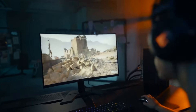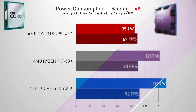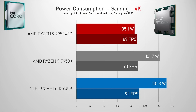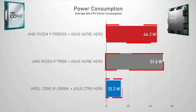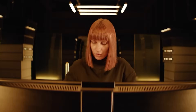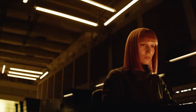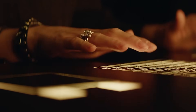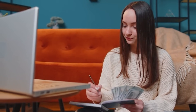The TDP of the X3D chip is much lower than the 7950X and its rival Intel's latest generation. Looking at CPU power consumption when gaming in 4K resolution, the 7950X3D is significantly more efficient, using only 85 watts on average compared to 122 watts for the 7950X and 132 watts for the 13900K, all under heavy GPU load. The only exception may be idle power consumption, where both AMD CPUs draw more power than the i9, though AMD may be able to fix this with a BIOS update.